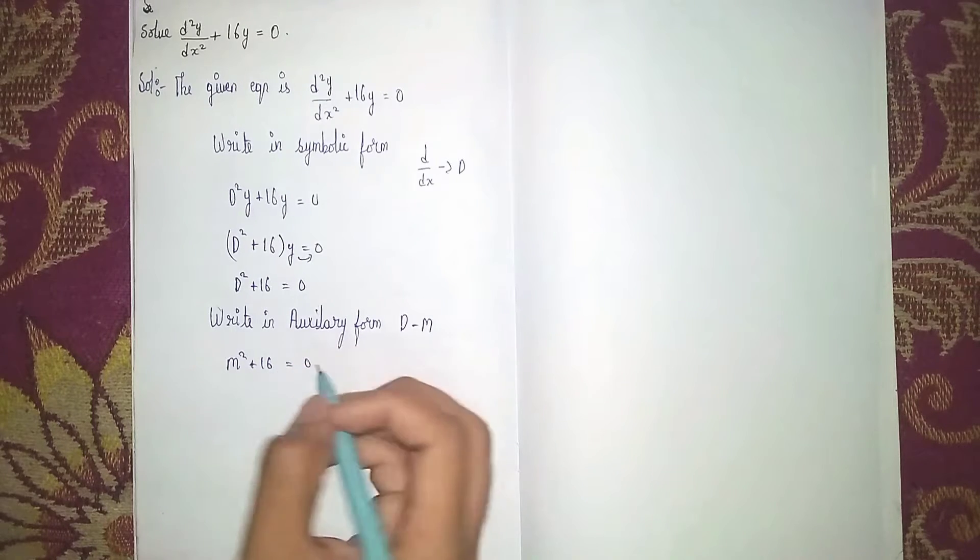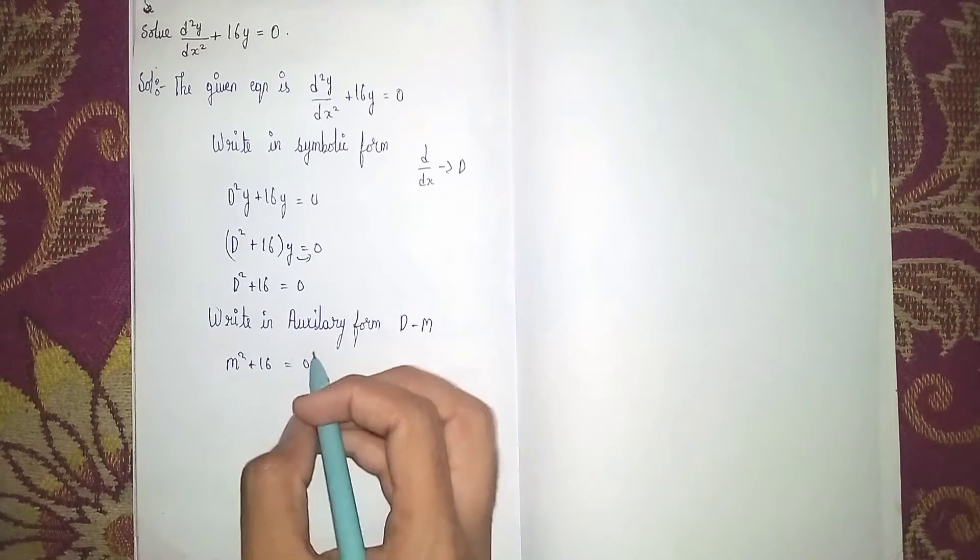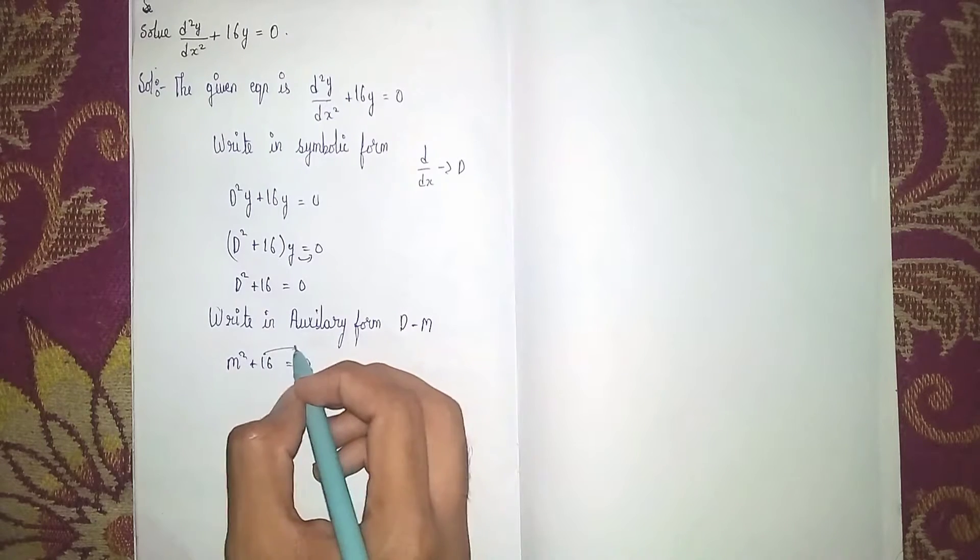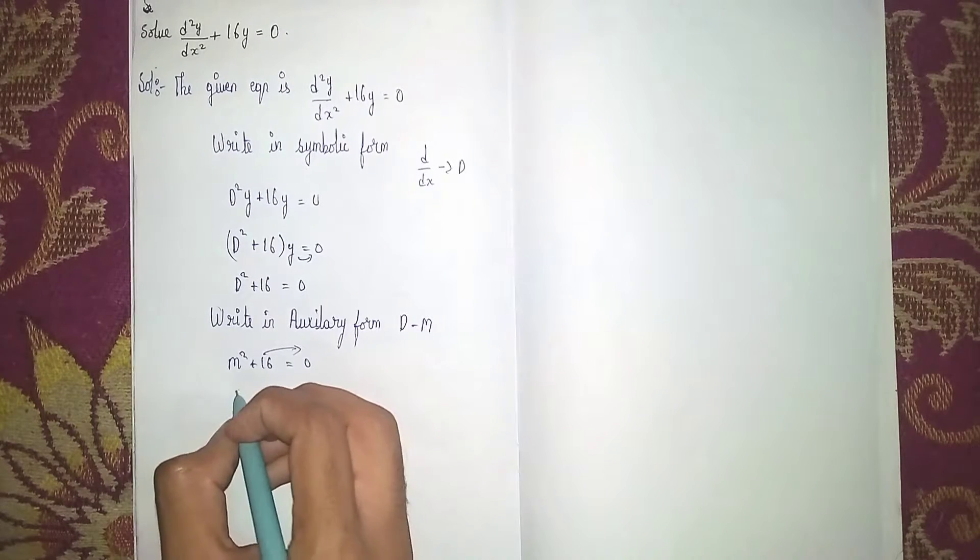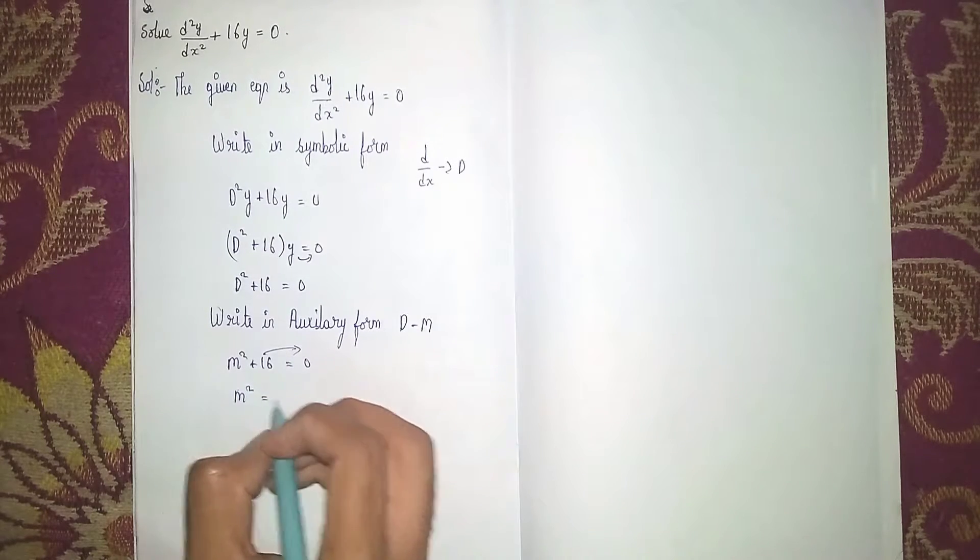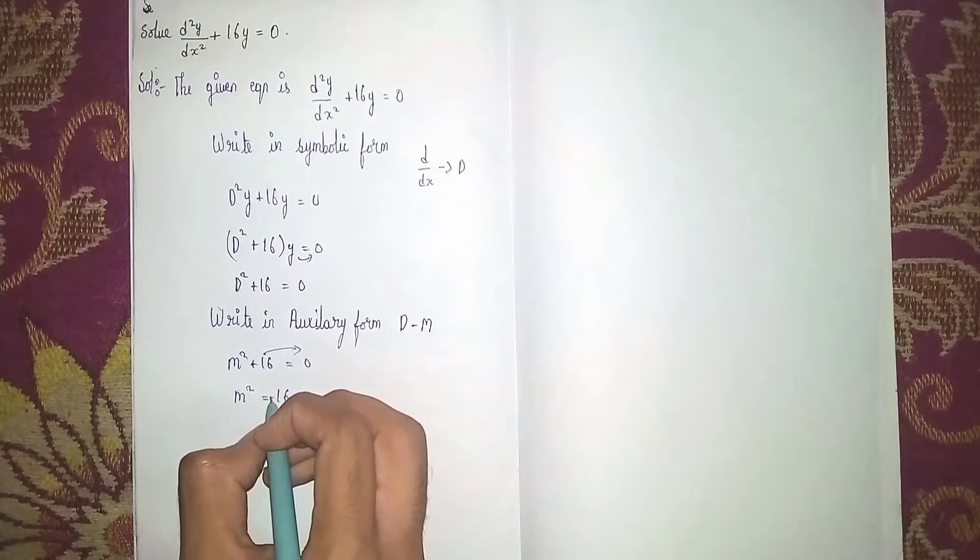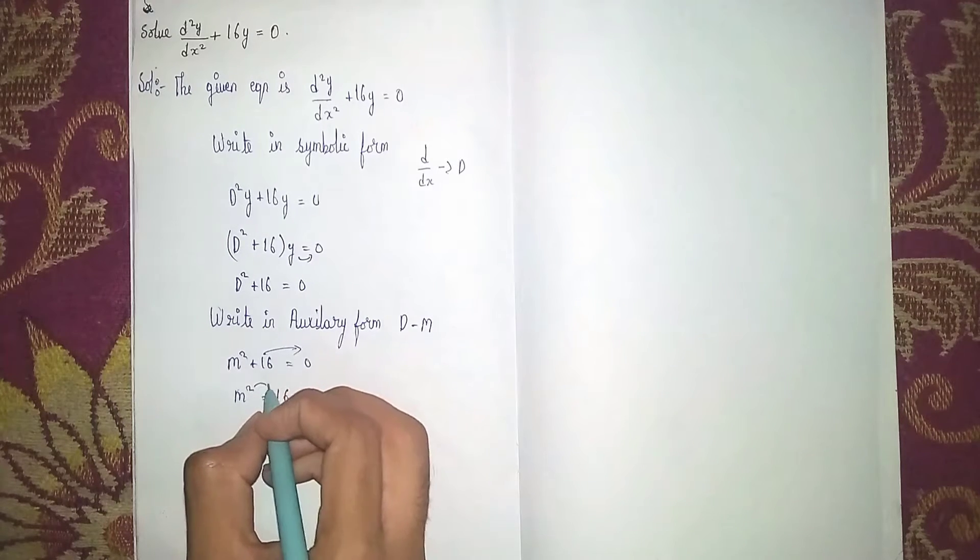Now what you will do, send this plus 16 to this side, becomes minus 16. So m squared is equal to minus 16. Send this square root to this side, it becomes the root.